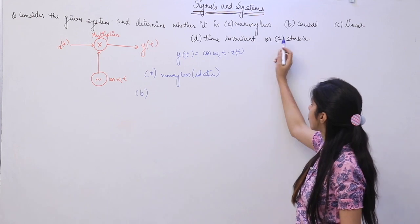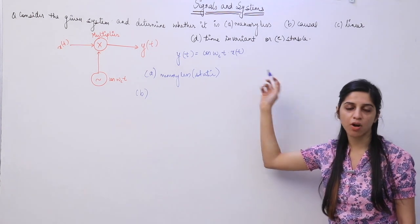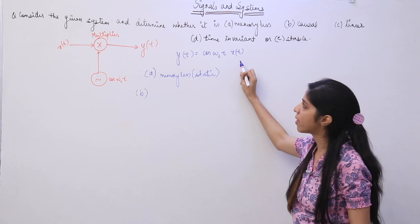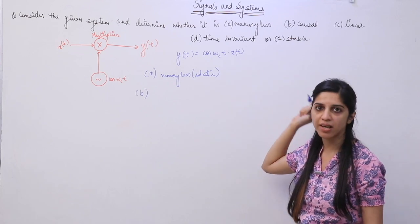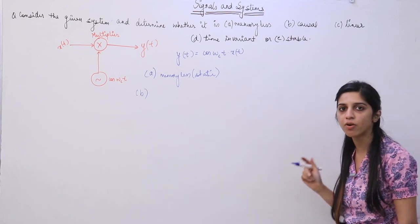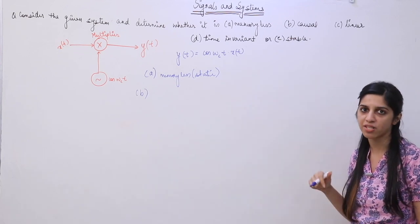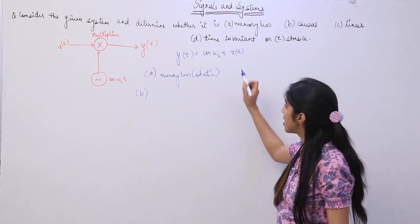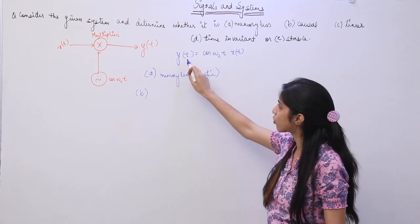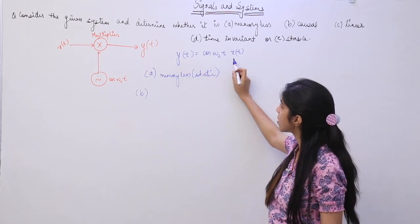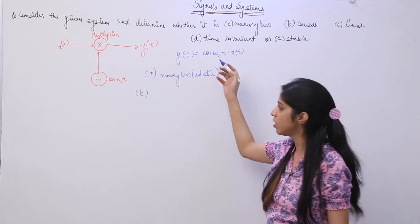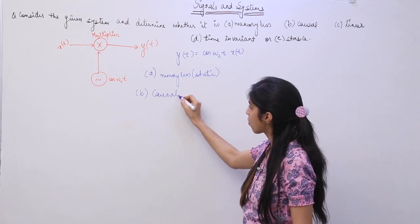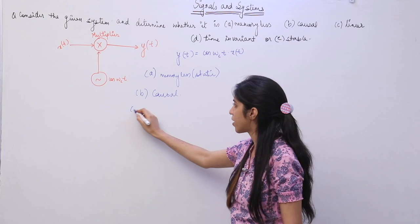For causal or non-causal: if a system does not depend on future values of input — if it depends only on present or past values of the input — we say the system is causal. Since this output depends only on the present values of the input, the system is going to be a causal system.